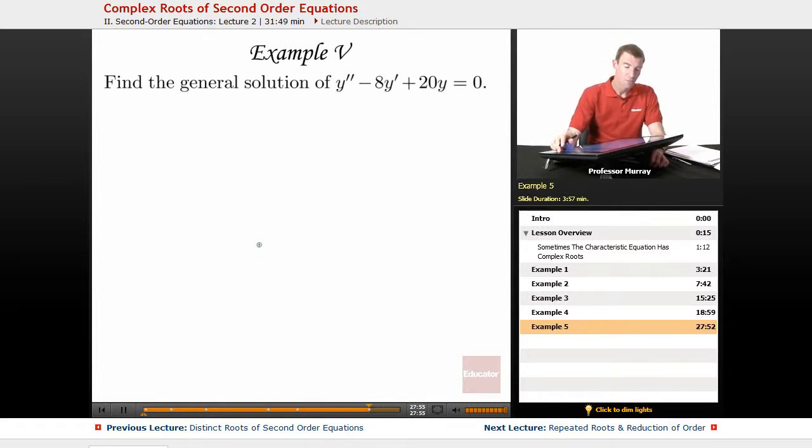So for our last example, we're going to find the general solution of y double prime minus 8y prime plus 20y is equal to 0.